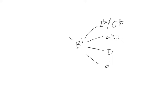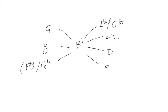Moving down a minor third, we would have the key of G major or G minor, and there are no enharmonic equivalents for those. Moving down a major third, we have the key of G-flat, which also has an enharmonic equivalent of F-sharp. Going down a major third with a minor quality, we have F-sharp minor, and there is no enharmonic equivalent.